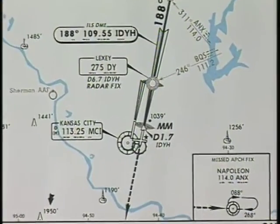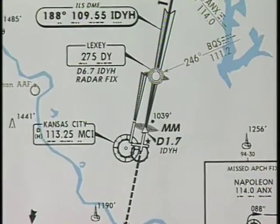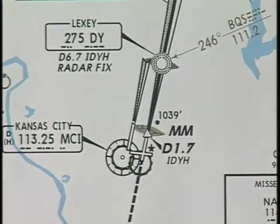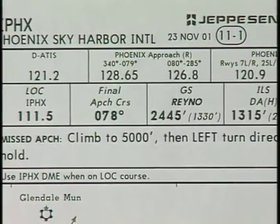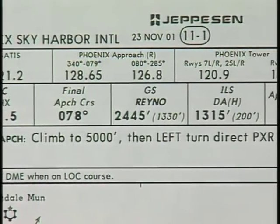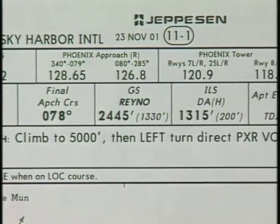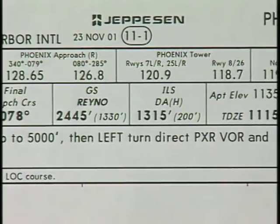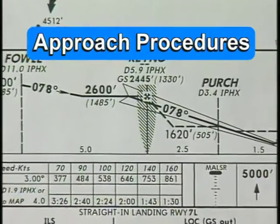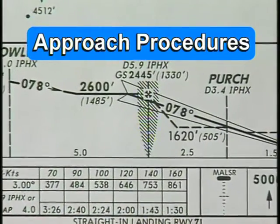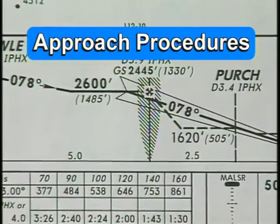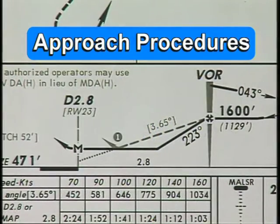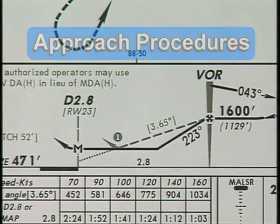The specifics of an instrument approach — such as altitudes, headings, descent angles, and missed approach procedures — may vary widely from one airport to another. Understanding the fundamental elements of an approach allows you to effectively plan and execute individual charted procedures.